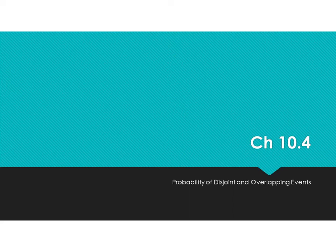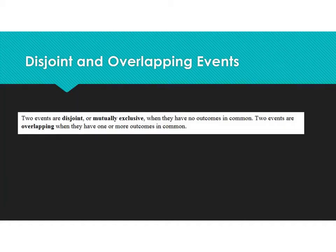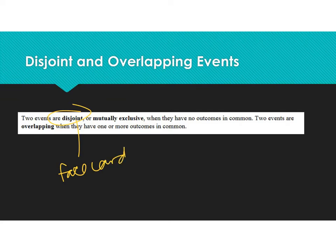Hi, everyone. Today we're going to discuss chapter 10-4, which is the probability of disjoint and overlapping events. We're going to start with two definitions on the top of page 298 in your journal. Two events are disjoint or mutually exclusive when they have no outcomes in common. For example, if I'm looking at a deck of cards, there's no way I can draw a face card and the card number three at the same time. Those are disjoint — there's no way they're ever going to happen at the same time.